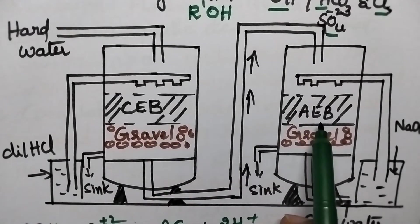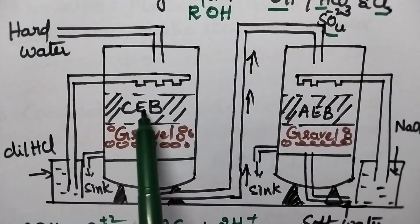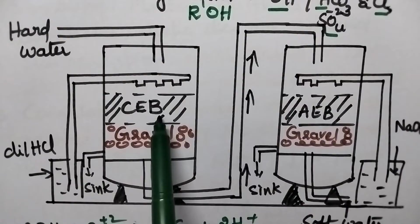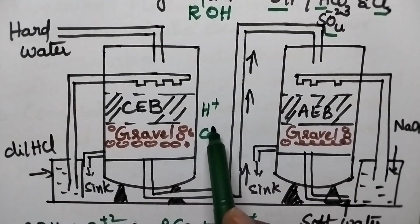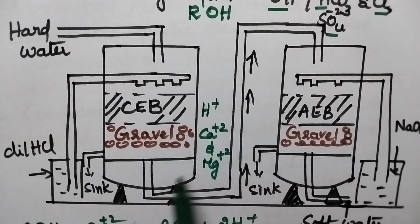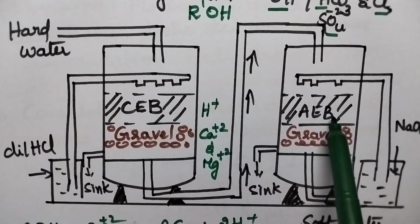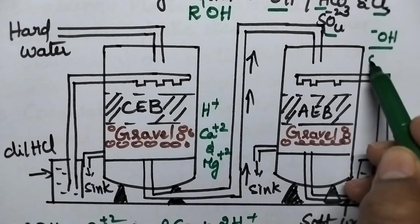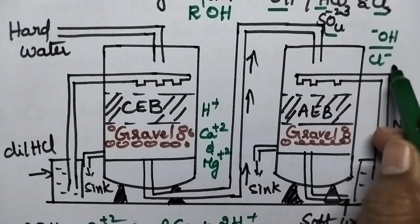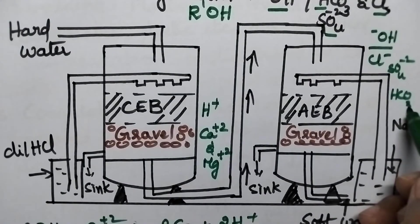Initially, the hard water is passed through the cation exchange bed. Here, the H+ ions are being replaced by the calcium and magnesium ions. The treated water is then passed through the anion exchange bed, where the OH- ions replace the Cl-, sulfate, and bicarbonate ions present in the water.